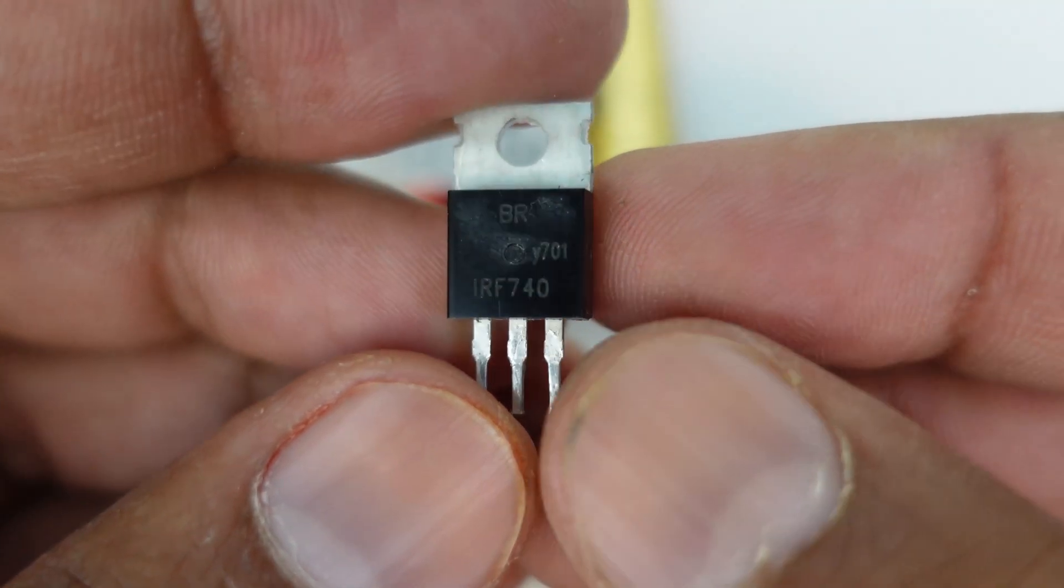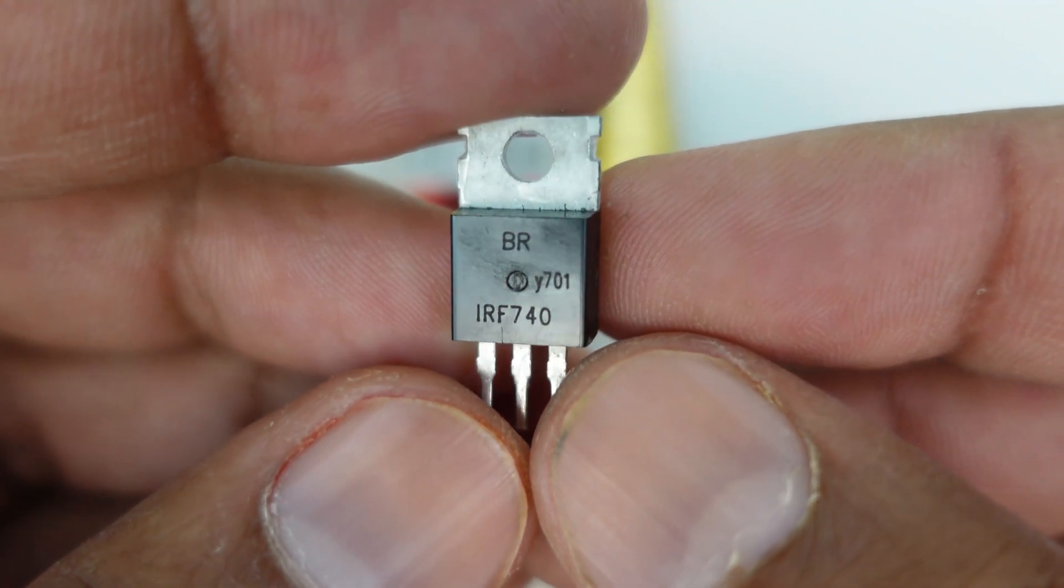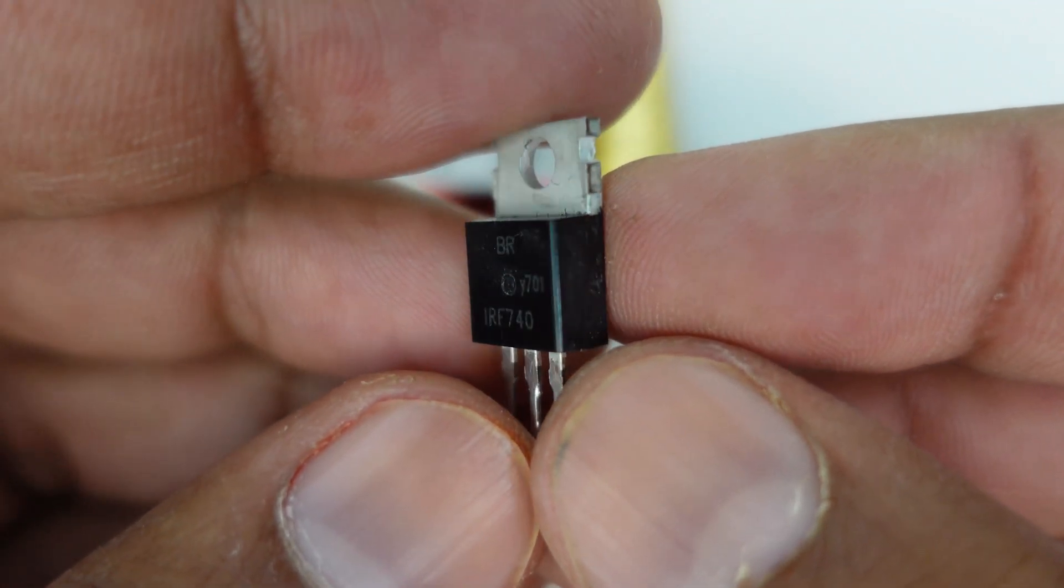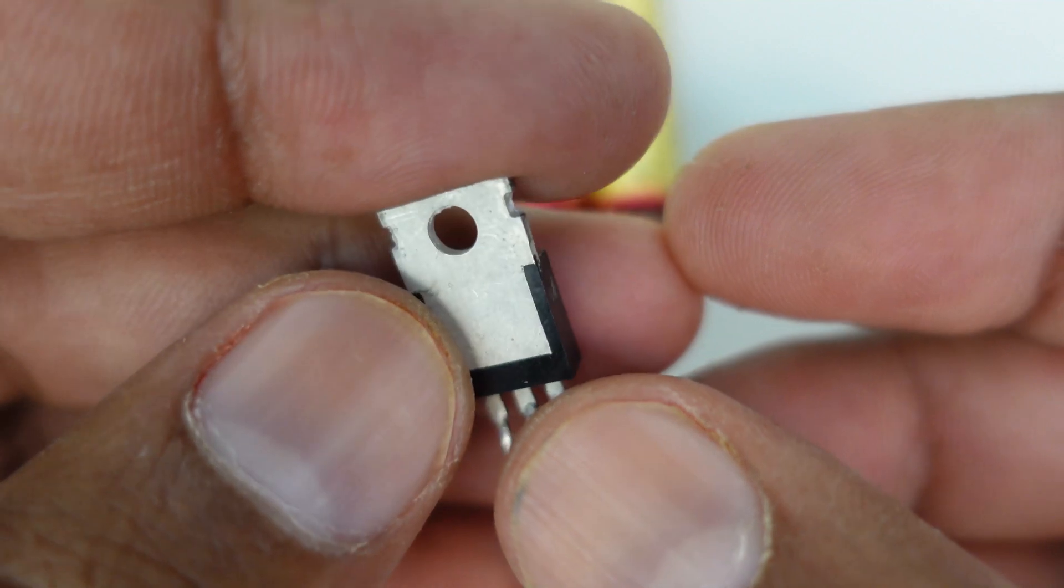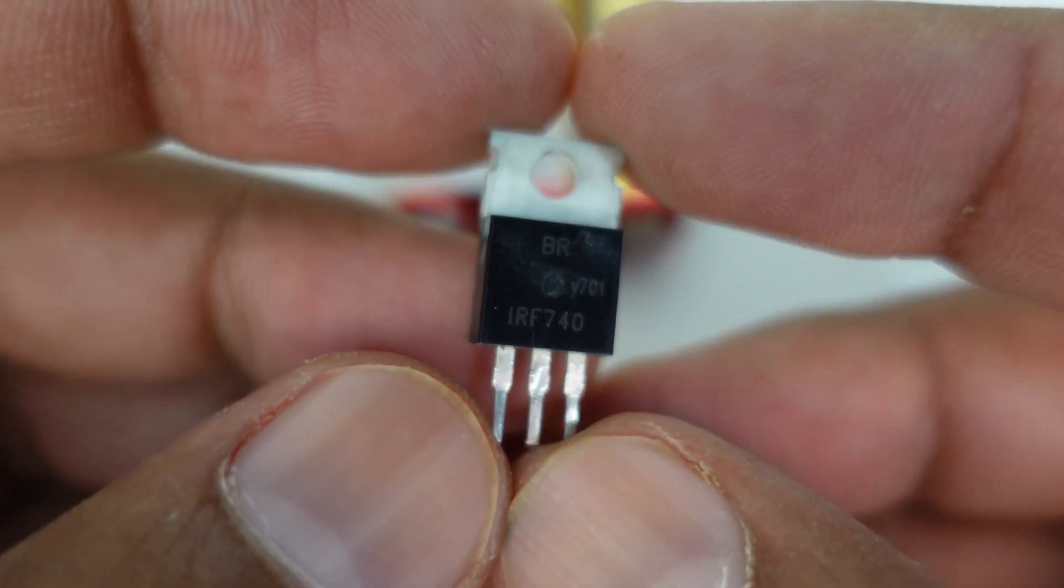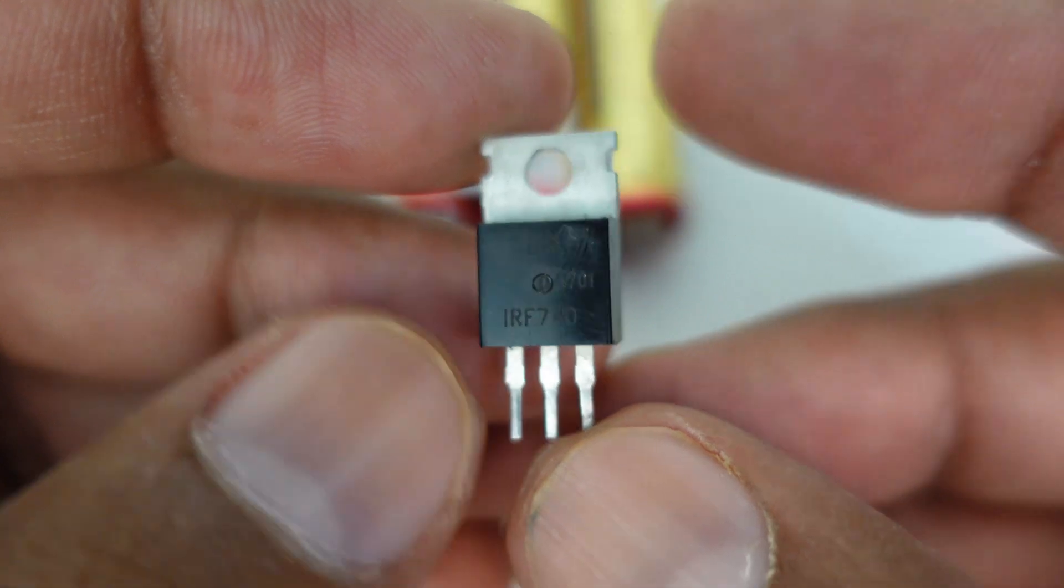The metal oxide semiconductor field effect transistor or MOSFET is the most common type of transistor today. It works like a switch and has relatively very low leakage of current and remembers its on or off status for decades.